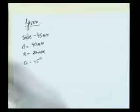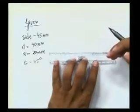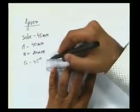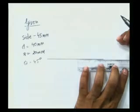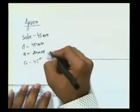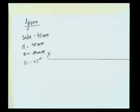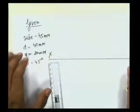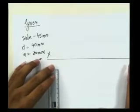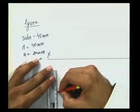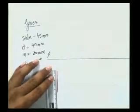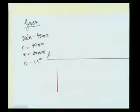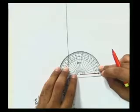Now what we have to do: first of all I'll draw a straight line which is my XY line. The first thing I have to draw is a pentagon of side 45 mm. The side is in HP, so here I will have a straight line of 45 mm. I'll draw a straight line of 45 mm, then I'll take the angle that is in the pentagon, which is 72 degrees.